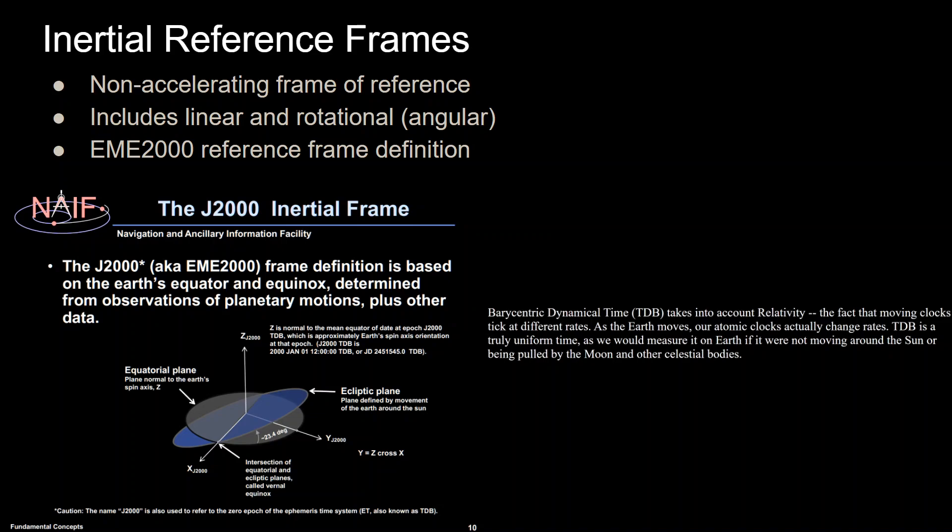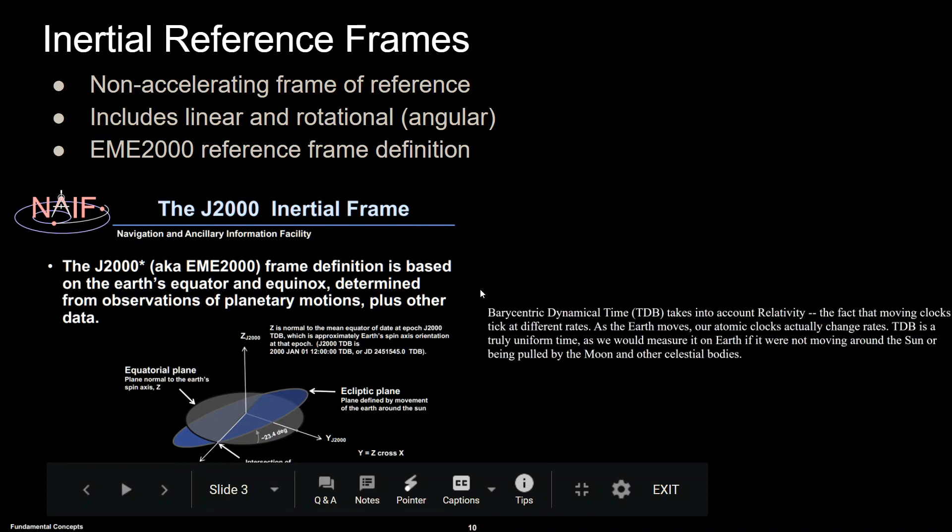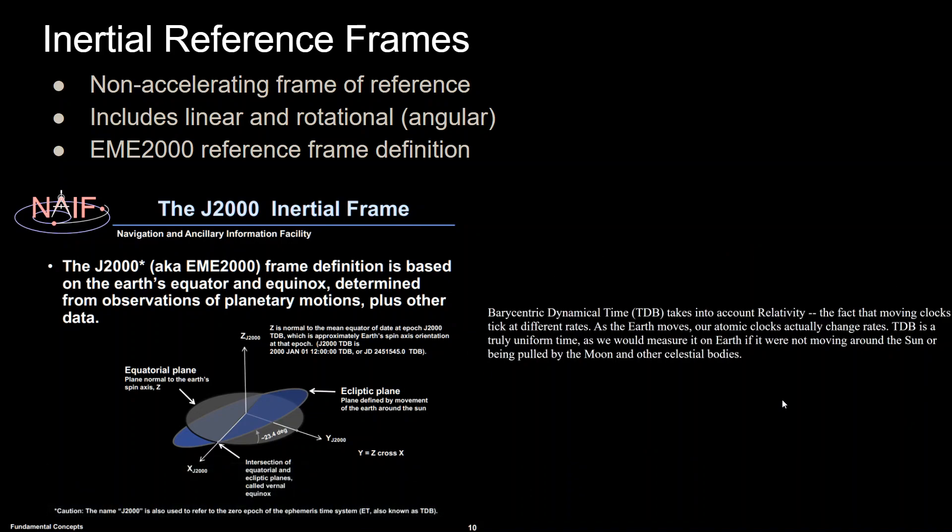The X-axis of this inertial frame is defined at that point of the intersection but at a very specific time, which is 2000, January 1st, 12 o'clock, TDB. Where TDB stands for barycentric dynamical time, which the acronym is that because it comes from French. You have to see with the definition here of what TDB is, you have to be extremely specific on how to define a truly inertial frame.